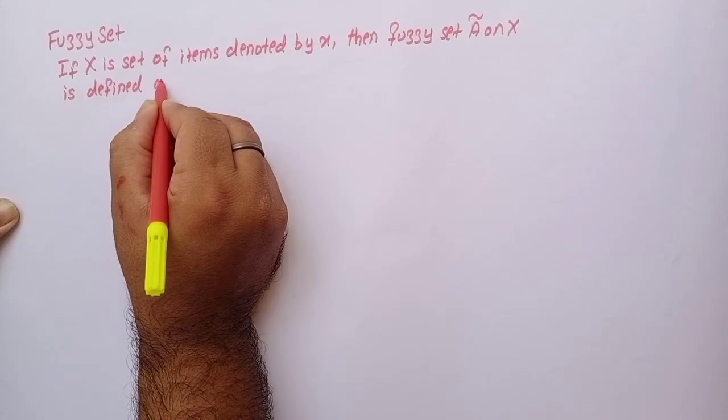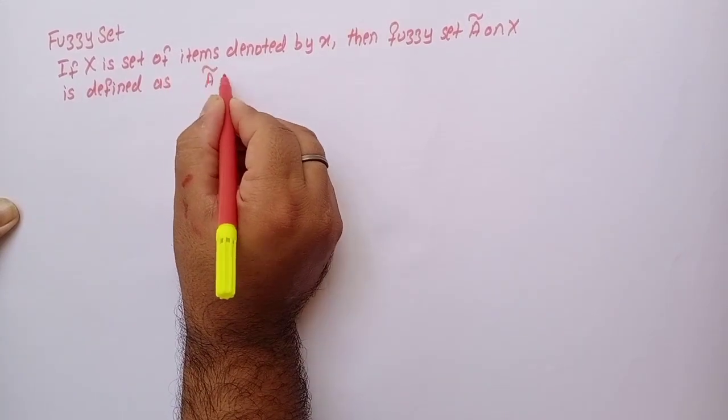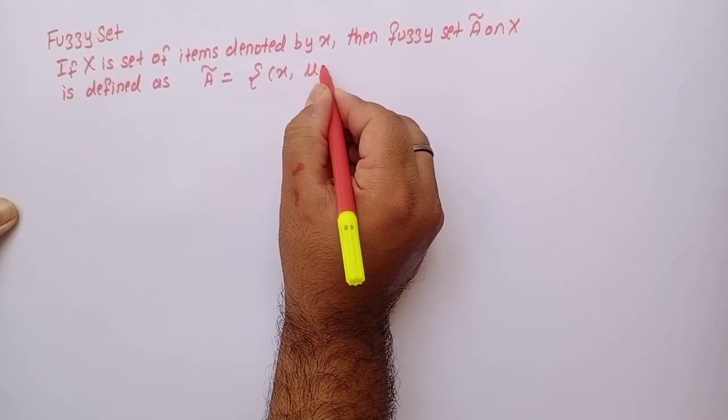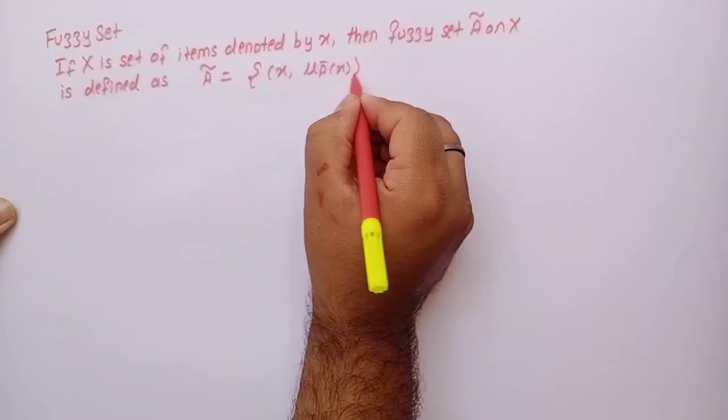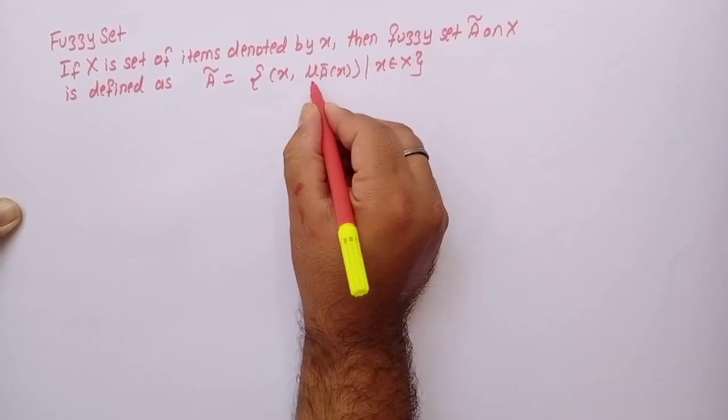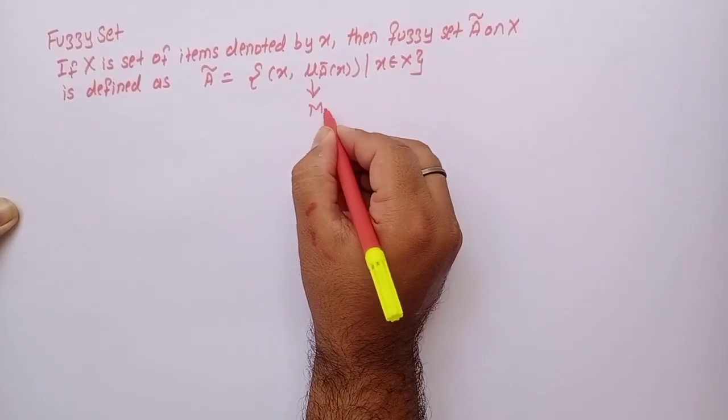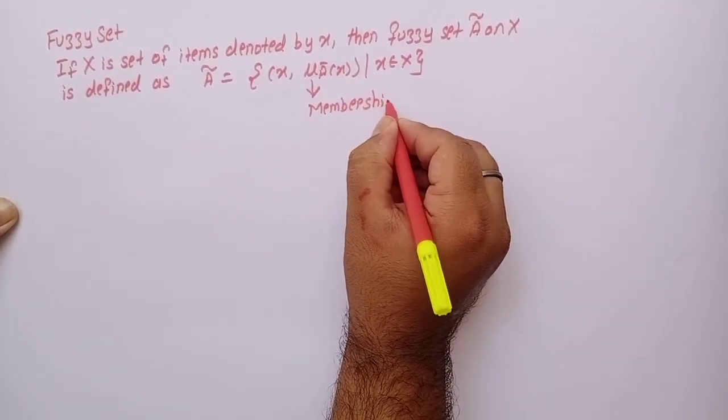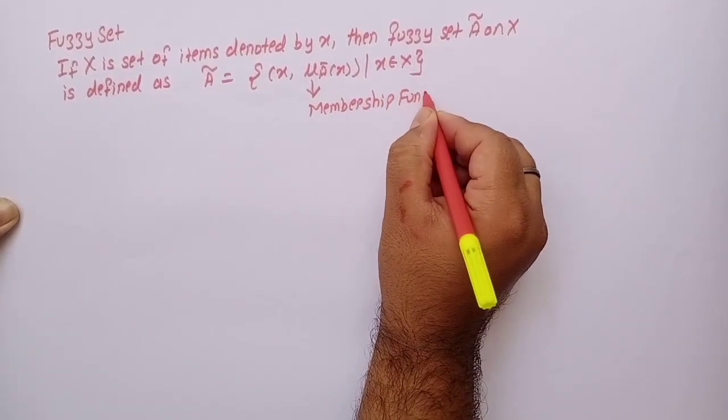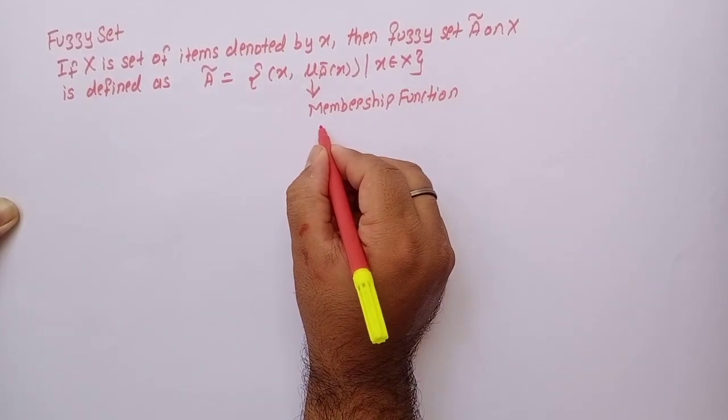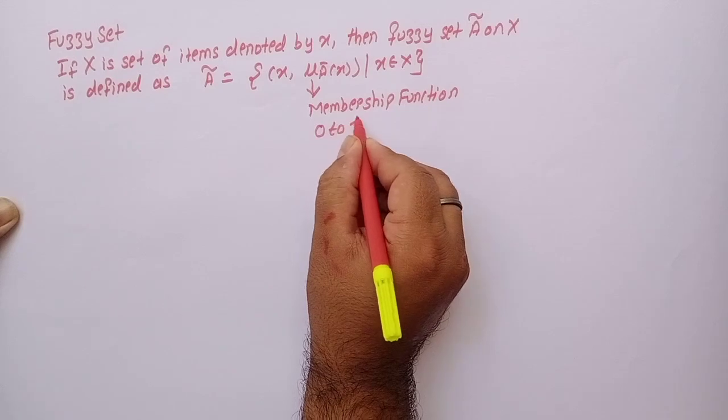This is known as membership function. The value of membership function always lies between zero to one.